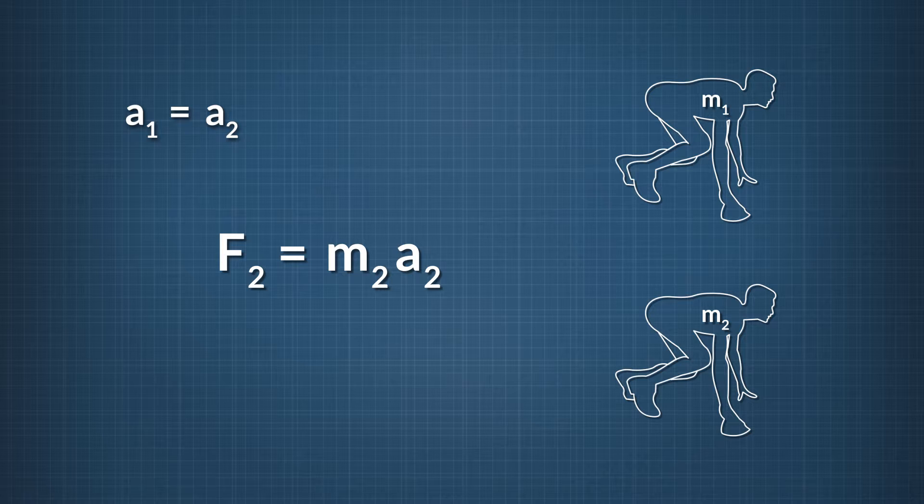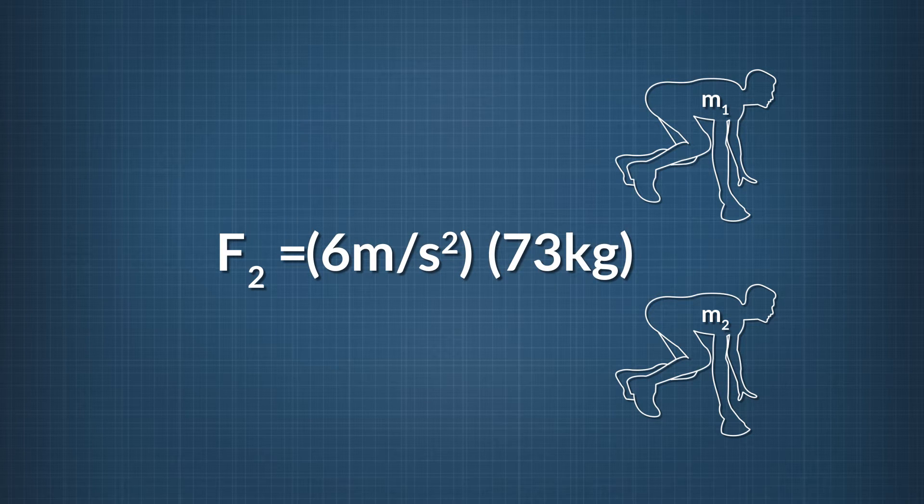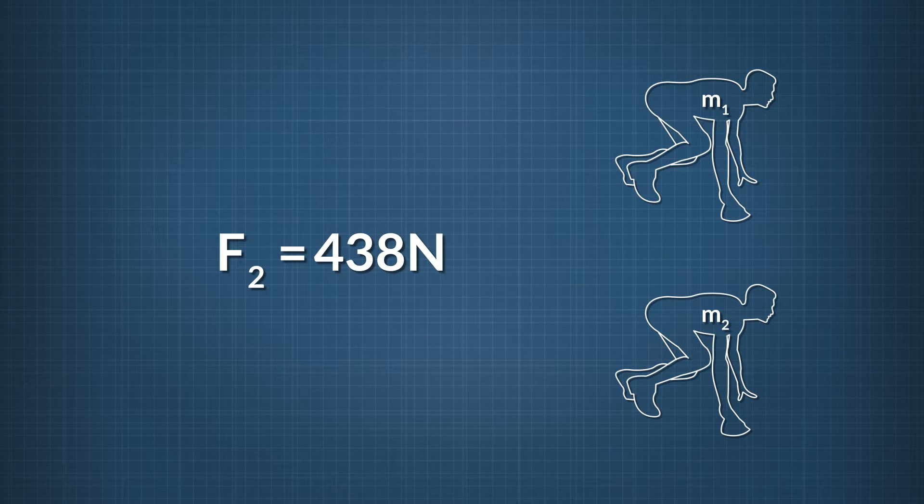The force of runner 2 equals mass times her acceleration. If we go back to our starting equation, that runner 1's acceleration equals the acceleration of runner 2, we can substitute that acceleration into our equation for runner 2's force and find that the force exerted by runner 2 equals the acceleration of runner 1 times the mass of runner 2. Plugging in the values for A1 and M2, we see that the force runner 2 needs to exert to accelerate just as much as runner 1 equals 6 meters per second squared times 73 kilograms, which equals 438 newtons or 440 newtons when using significant figures.